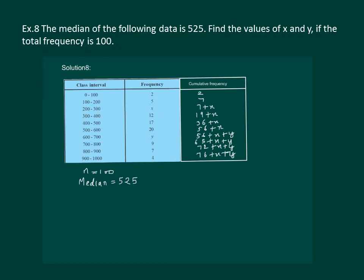Now we know that the last entry in the cumulative frequency is sum of the frequencies, implying that 76 plus x plus y equal to 100, or x plus y equal to 100 minus 76, that is 24.